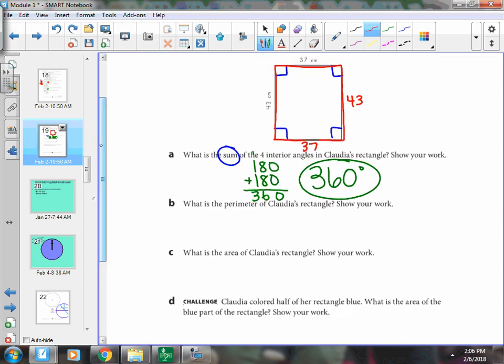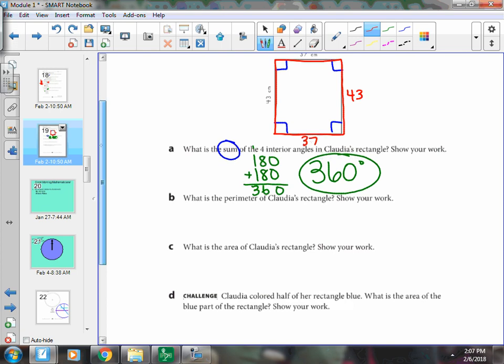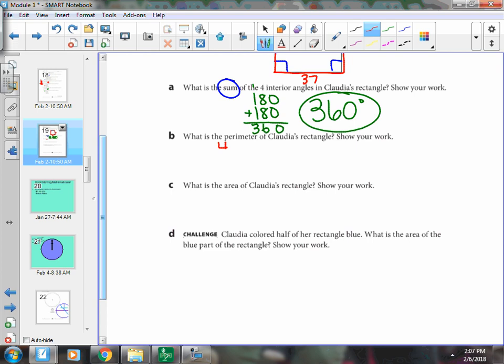You could also do 43 plus 43, 37 plus 37, and add that all together as well. Okay, so I'm going to do 43 plus 37, and then double that, which would be 160.